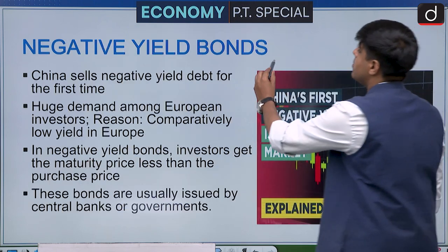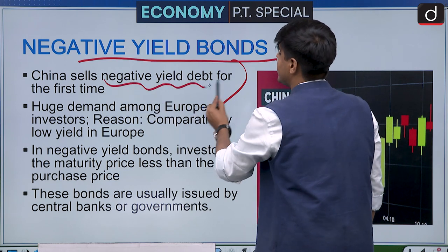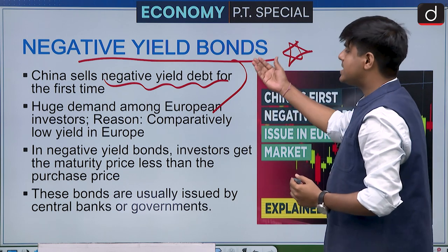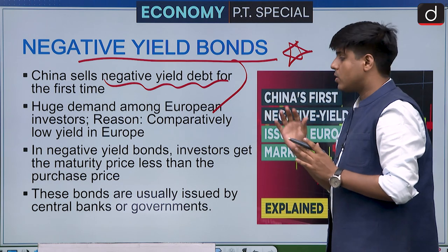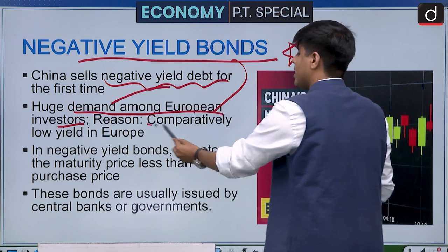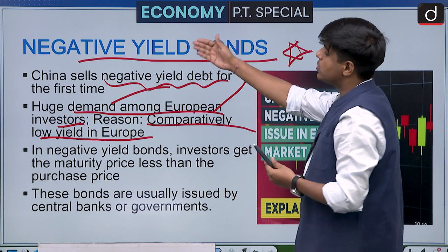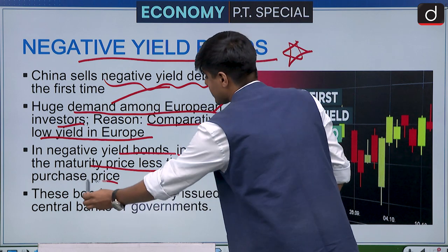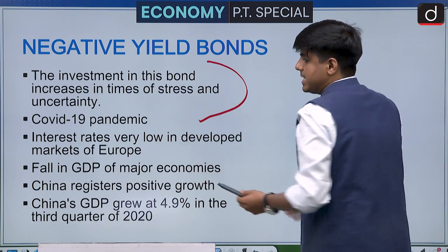Negative yield bonds: China has for the first time issued negative yield debt in the market. This sounds counterintuitive — after maturity, these bonds give back less than what was invested. These bonds have seen huge demand among European investors. In negative yield bonds, investors get a maturity price less than the purchase price. They are usually issued by central banks or governments.